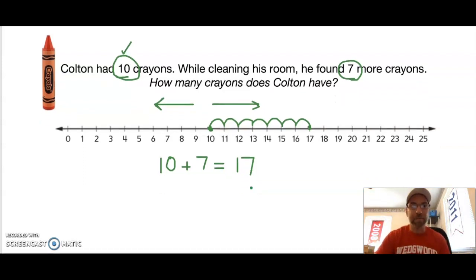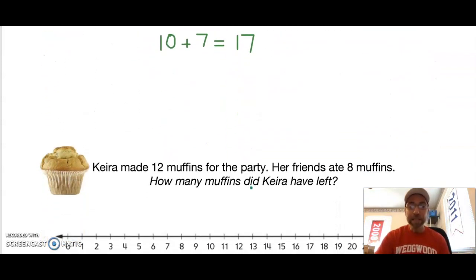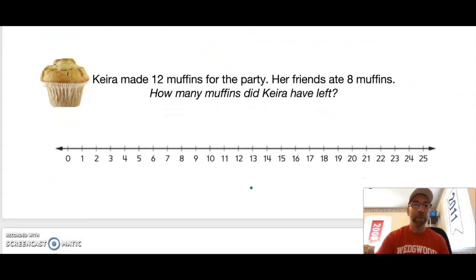Let's look at our next practice problem. This one's about my friend Kira. Kira made 12 muffins for the party. Her friend ate 8 muffins. How many muffins did Kira have left? First thing I like to do is circle my numbers: 12 and 8.